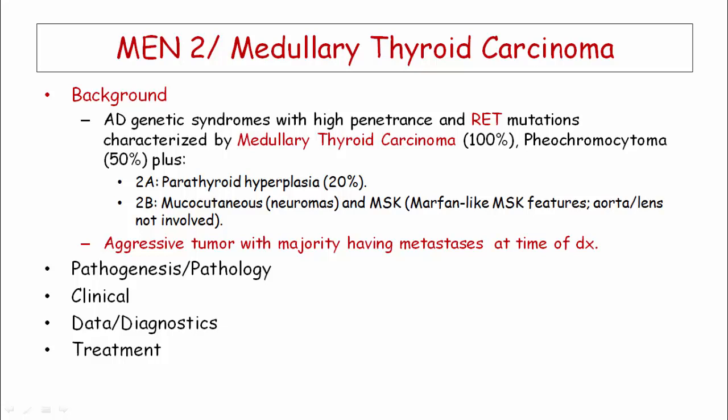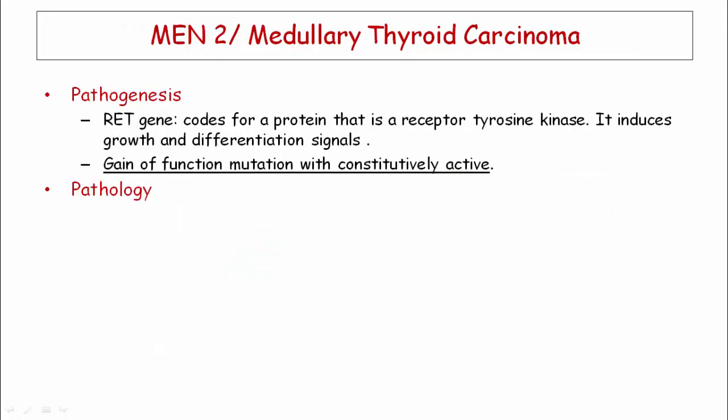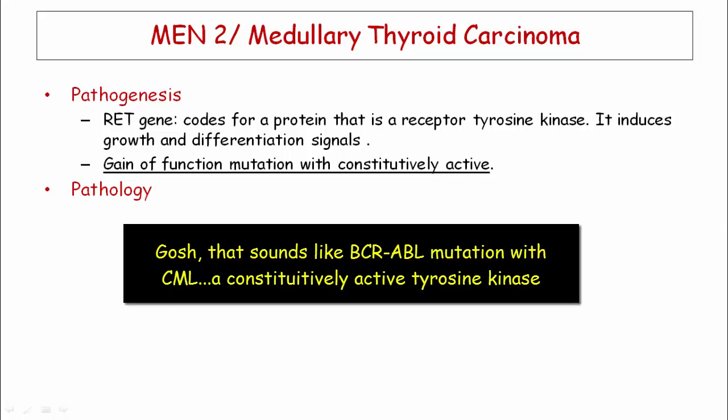To summarize MEN2: it is an autosomal dominant syndrome with high penetrance and the RET mutation. 100% of MEN2 patients have medullary thyroid carcinoma. The majority of patients have metastases at the time of diagnosis, so we want to find these early. The RET mutation is a gain-of-function mutation with constitutively active receptor tyrosine kinase that induces growth and differentiation — this sounds very much like the BCR-ABL fusion protein associated with CML.